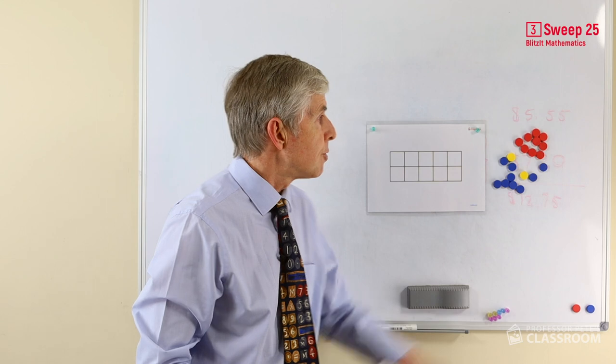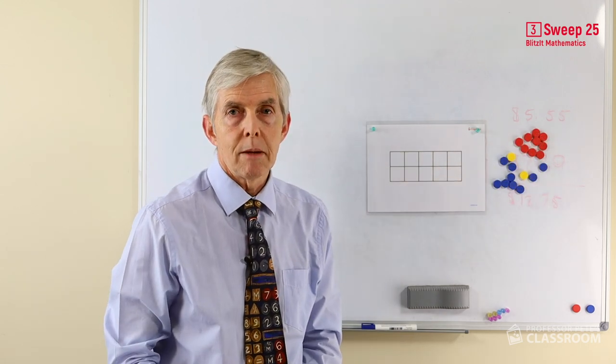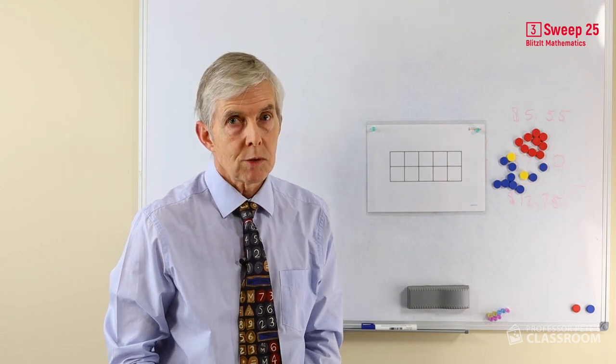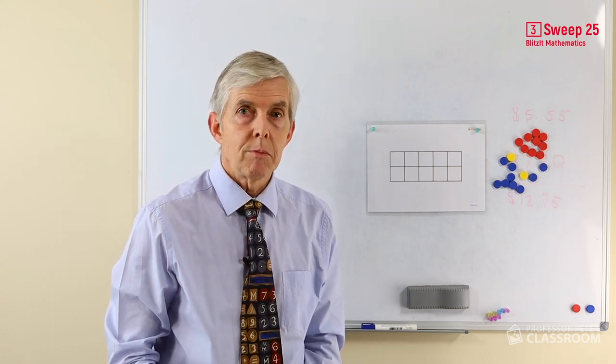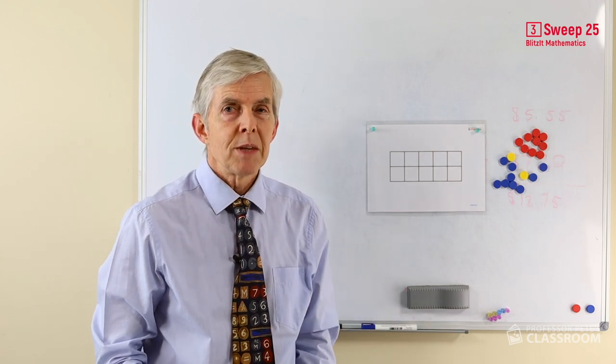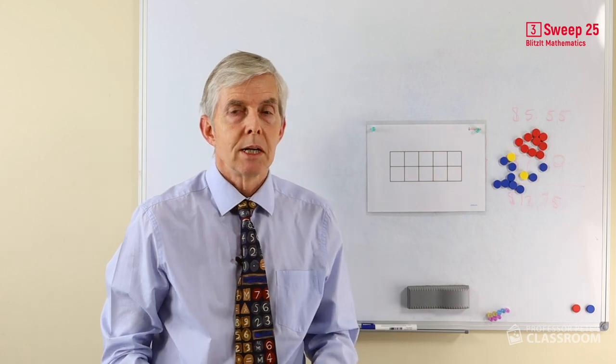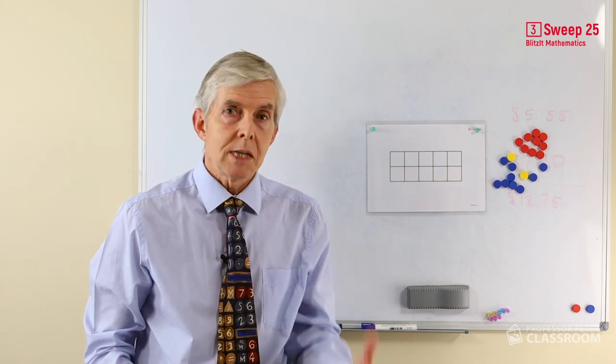So here we have 20 counters. If we share those 20 among the ten spaces, how many will there be? What is one tenth of 20? What is 20 divided by two? All equivalent statements. Of course the answer is two. There's a clue in dividing by ten because there will be a zero in the ones place and the number of tens will be in the tens place.